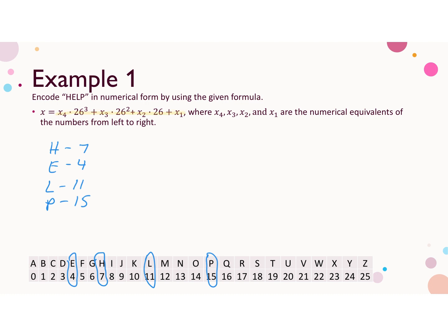We're using this formula where X4 is the 7 corresponding to the H, X3 is the 4 from E, X2 is 11, and X1 is P. So plugging those values into the formula, we've got 7 times 26 cubed plus 4 times 26 squared plus 11 times 26 plus 15. That gives us 126,037.